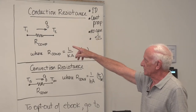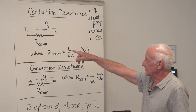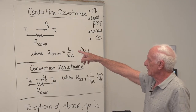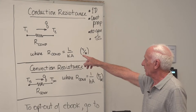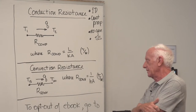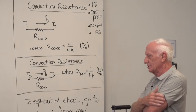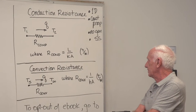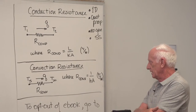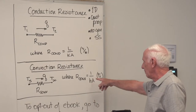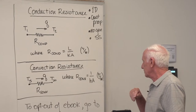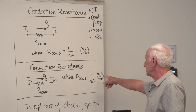Here's our picture of the resistance — conduction between two temperatures, T1 hot and T2 cold, with heat flow Q. The conduction resistance is L over KA, where L is the thickness of the wall, K is the wall thermal conductivity, and A is the cross-sectional area. The units are degrees C per watt. We also developed a convection resistance: 1 over HA, where H is the convection coefficient and A is the area of the wall — same units, degrees C per watt.